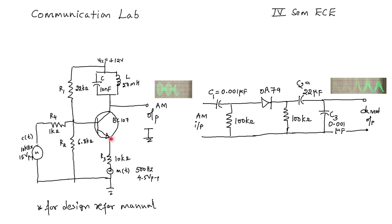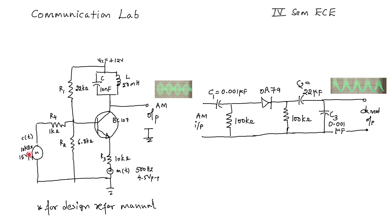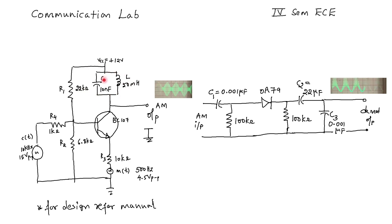This is the circuit we are using — for the design part, please refer to the lab manual. We are applying the carrier signal at the base of this transistor with a frequency of 10 kilohertz and 15 volts peak-to-peak amplitude. This is a voltage divider bias circuit. We also have a tank circuit designed to oscillate at approximately 9 kilohertz, and we have taken the carrier frequency as 10 kilohertz.